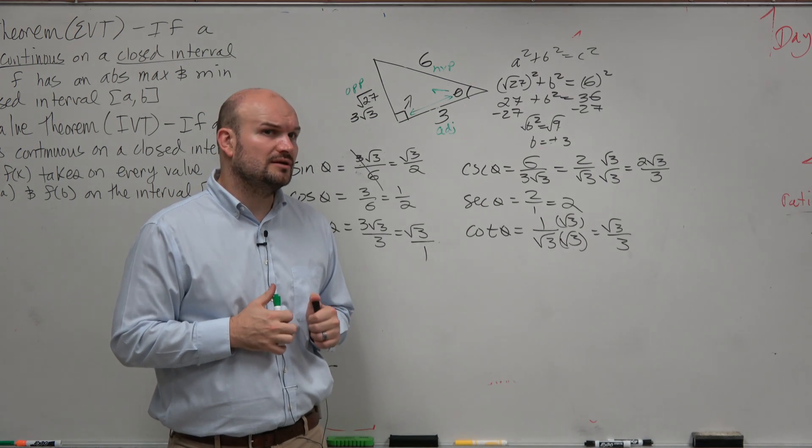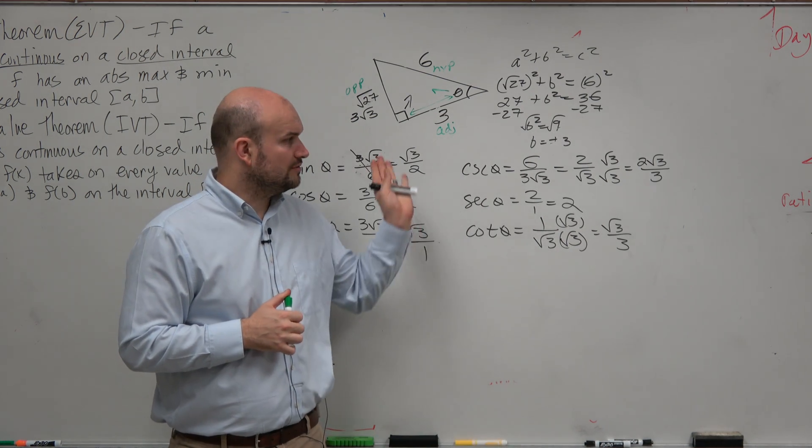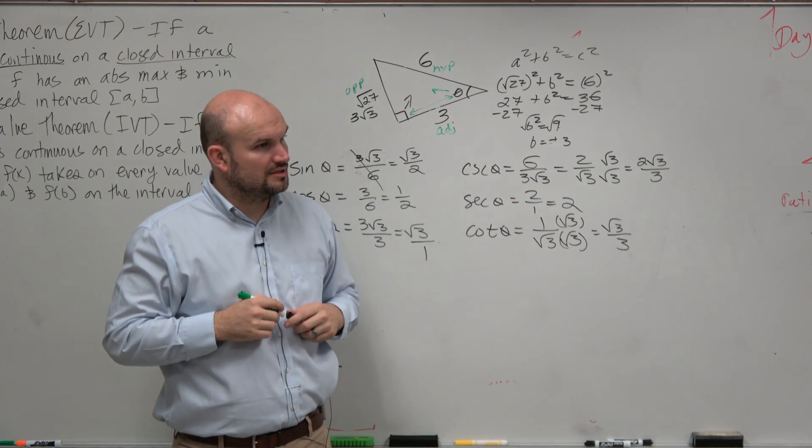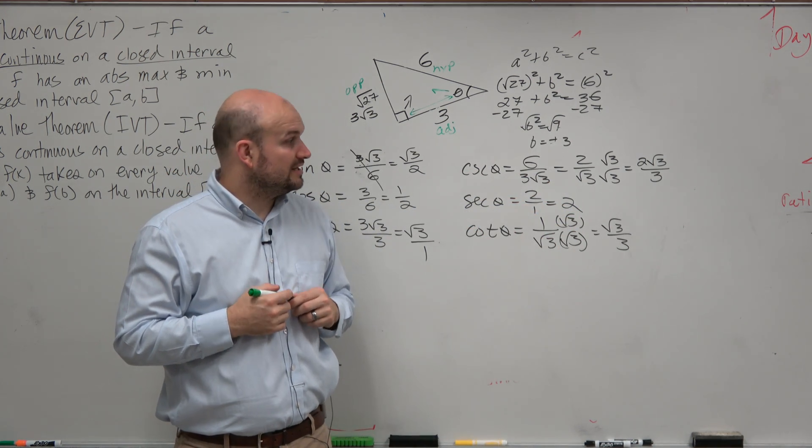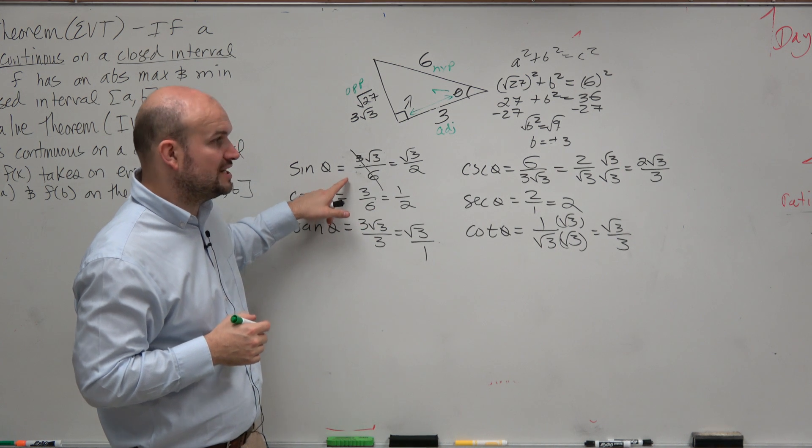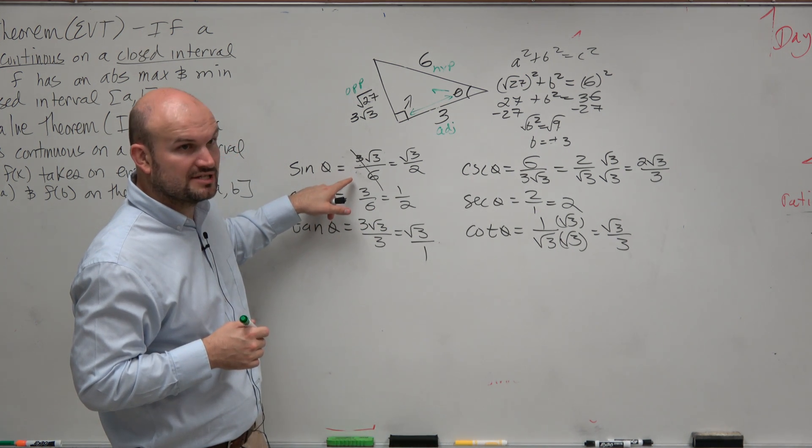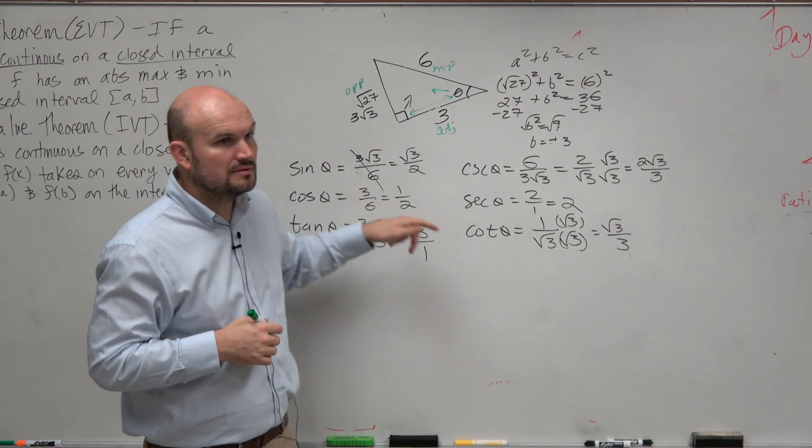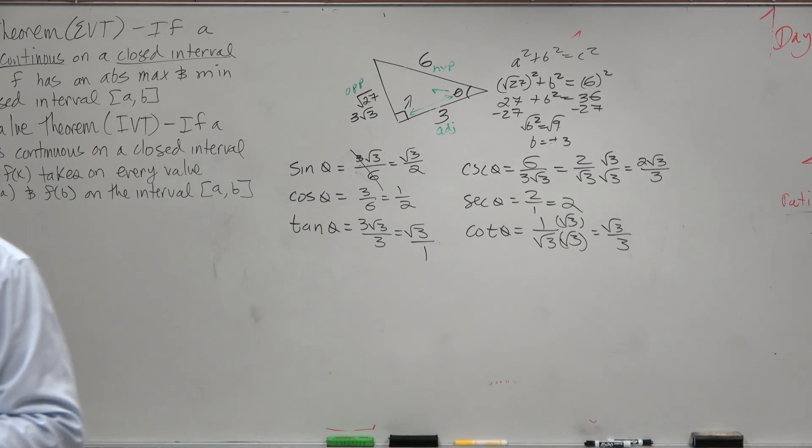Now, was this a 30-60-90 triangle? Look at the ratios here and look at the ratios of one of those triangles, specialty triangles. Would you guys agree that the sine opposite over adjacent is the same as that 30-60-90 triangle? So it's hidden.